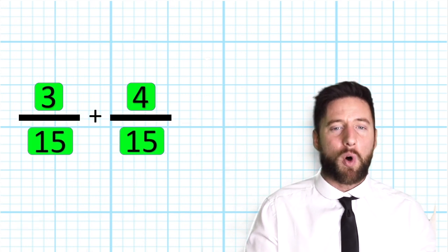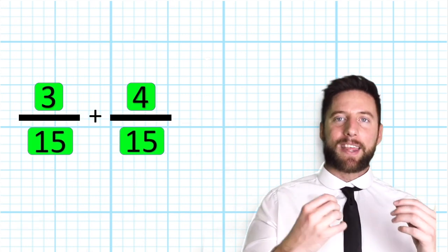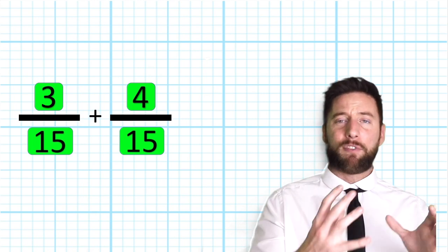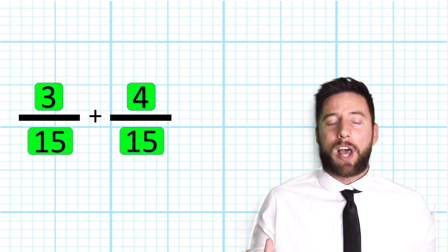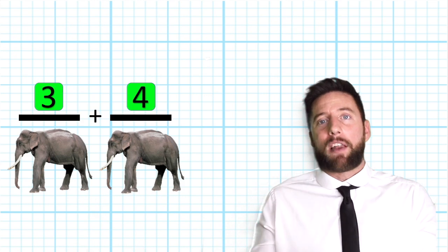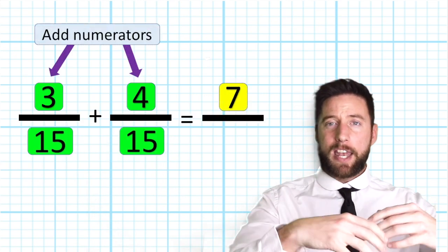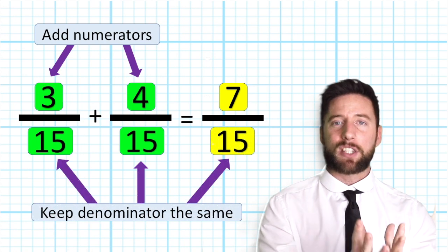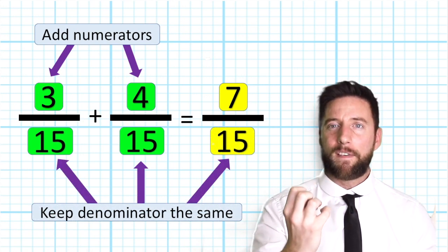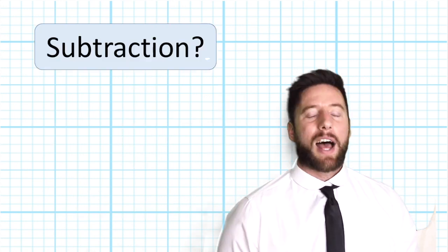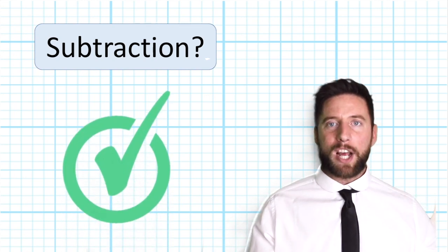Let's see another example of this trick. If we had 3/15 add 4/15, we could have three elephants, add four elephants, three add four is seven, the name of the fraction hasn't changed, it's a fifteenth, so we have 7/15, simple. And the good news, that works with subtraction as well.